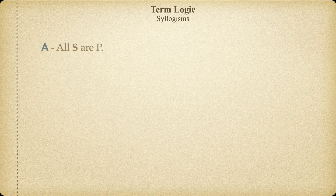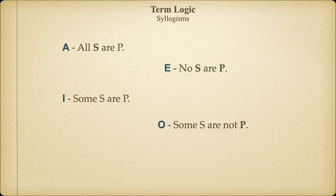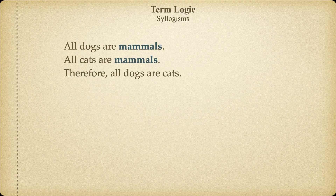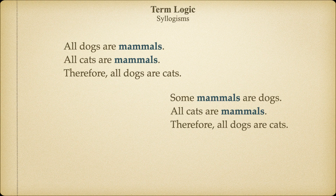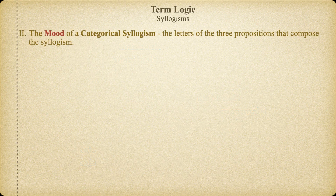The building blocks of categorical syllogisms are the four categorical propositions: the universal affirmative, the universal negative, the particular affirmative, and the particular negative — the A, E, I, and O propositions. We also mentioned that the middle term of a categorical syllogism could either be in the subject or the predicate position of the premise in which it's found. In this video, we want to look more carefully at these two facts and see how they affect categorical syllogisms. The kinds of propositions a categorical syllogism is built from and the orientation of the middle term turns out to be essential to the success or validity of a categorical syllogism.